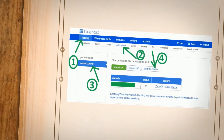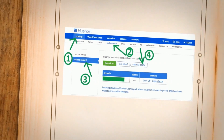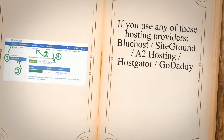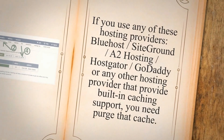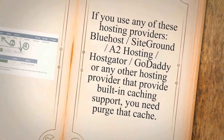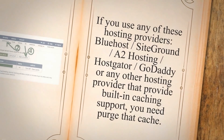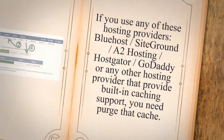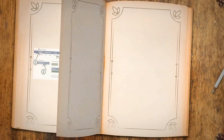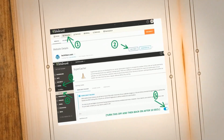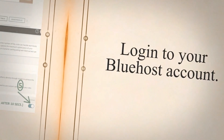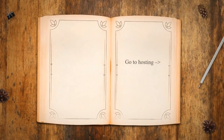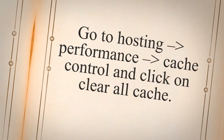Delete cache from your hosting — optional step. If you use any of these hosting providers: Bluehost, SiteGround, A2 Hosting, HostGator, GoDaddy, or any other hosting provider that provides built-in caching support, you need to purge that cache. For Bluehost users: log in to your Bluehost account, go to Hosting > Performance > Cache Control, and click on Clear All Cache.